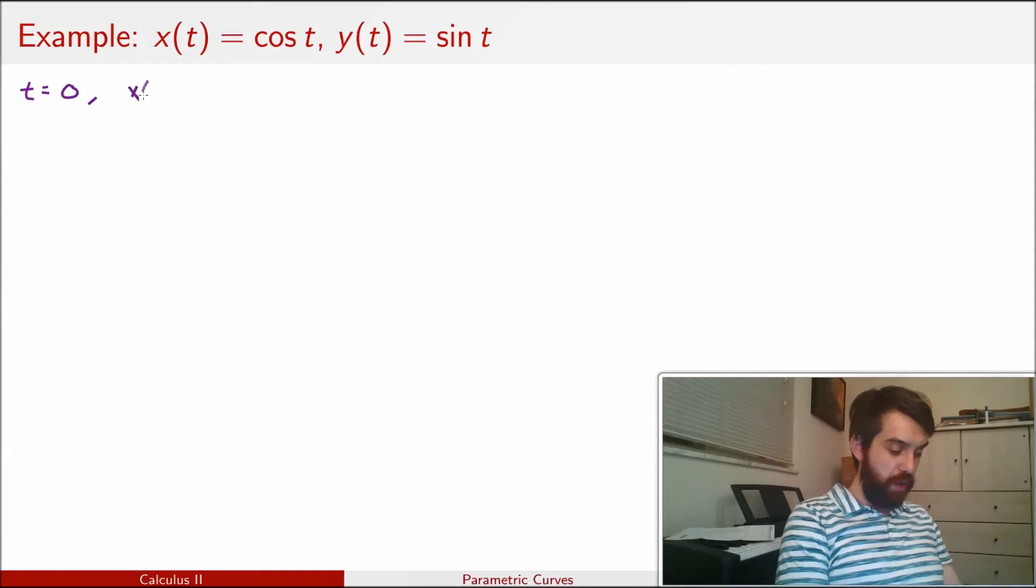So if t is going to be equal to 0, then cos of 0 is just going to be 1, and sin of 0 is just going to be 0. And I can do this for a bunch of different points.